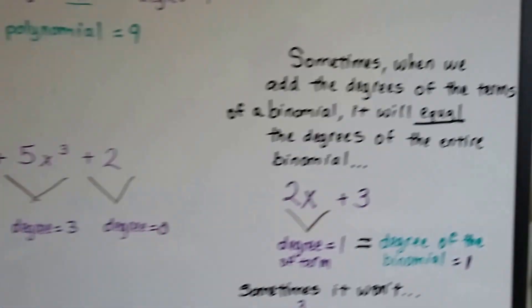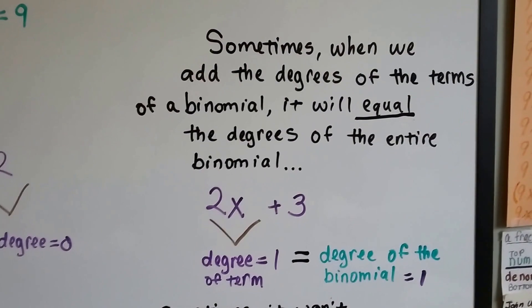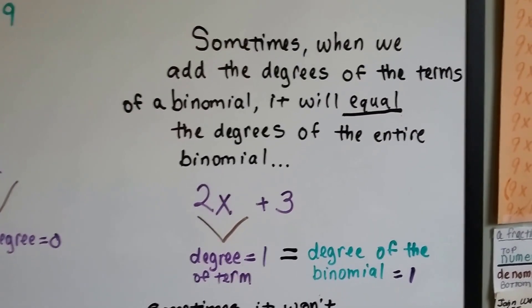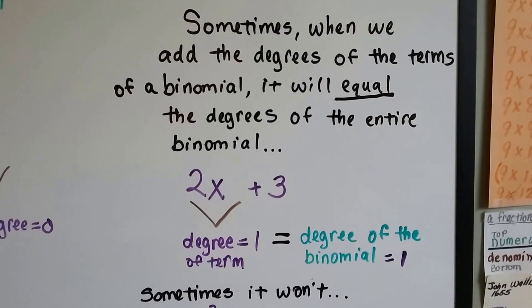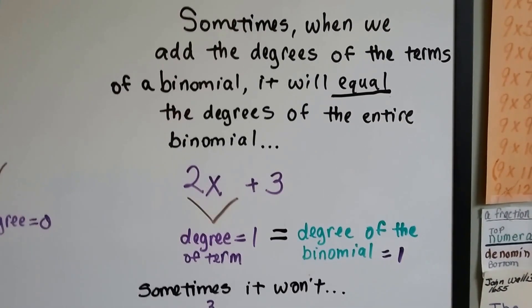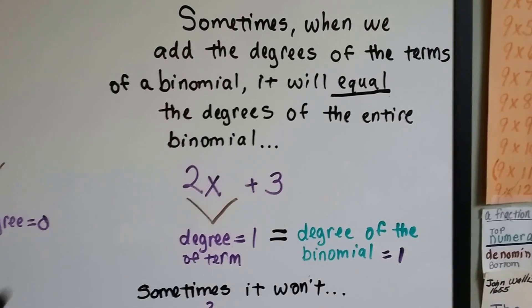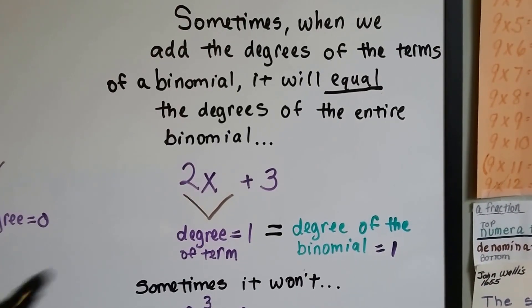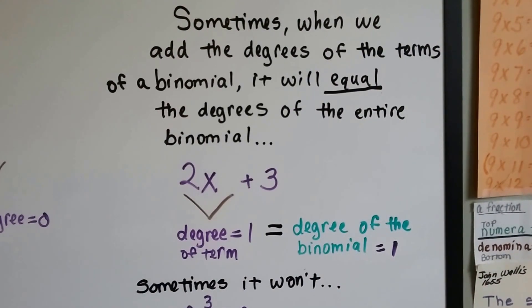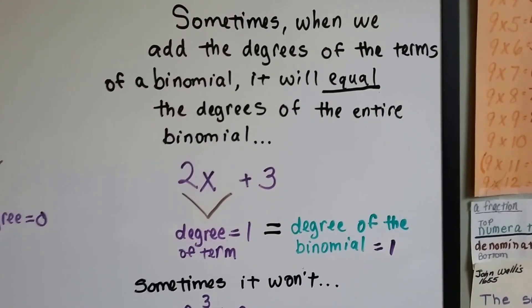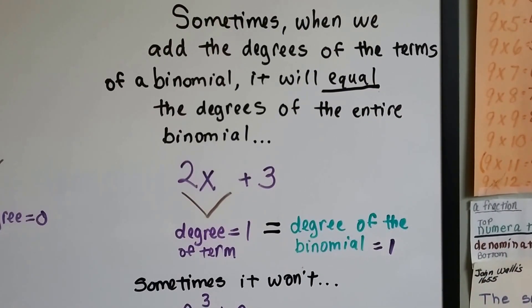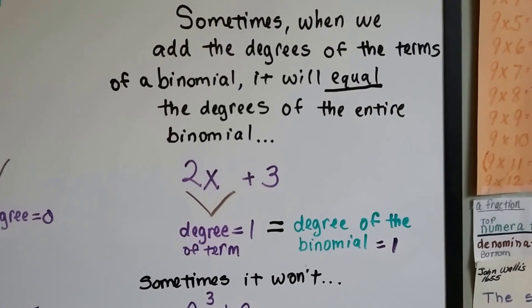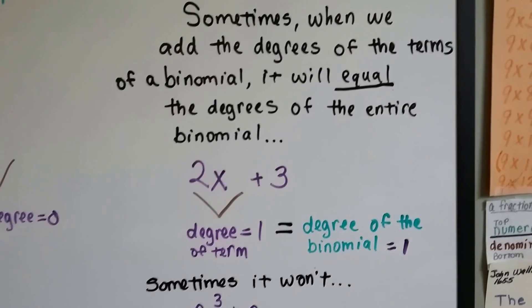Now, sometimes when we add the degrees of terms, we could do it of a binomial or a polynomial. When we add the degrees of the terms of a binomial, it'll equal the degrees of the entire binomial. This has only got an invisible 1 for an exponent. So it's got a degree of 1 for this term. And, because that's got 0, the degree of the binomial is a 1. So, the degree of the term and the degree of the entire binomial is the same, it's equal. That can happen sometimes.